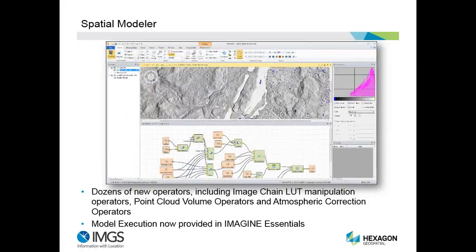The area we're going to cover this morning is spatial modeler. With the 2015 release, there are dozens of new operators, including image chain manipulation operators, point cloud and atmospheric correction operators. There are now three levels of Imagine: Essentials, Advantage, and Professional. Professional is the one that provides spatial modeler. With Professional, you can actually publish your models to a user who is using Essentials — they can't create or edit the model, but they can run it. So you get one power user with Professional and then have multiple users with Essentials who can run the models and see the results.